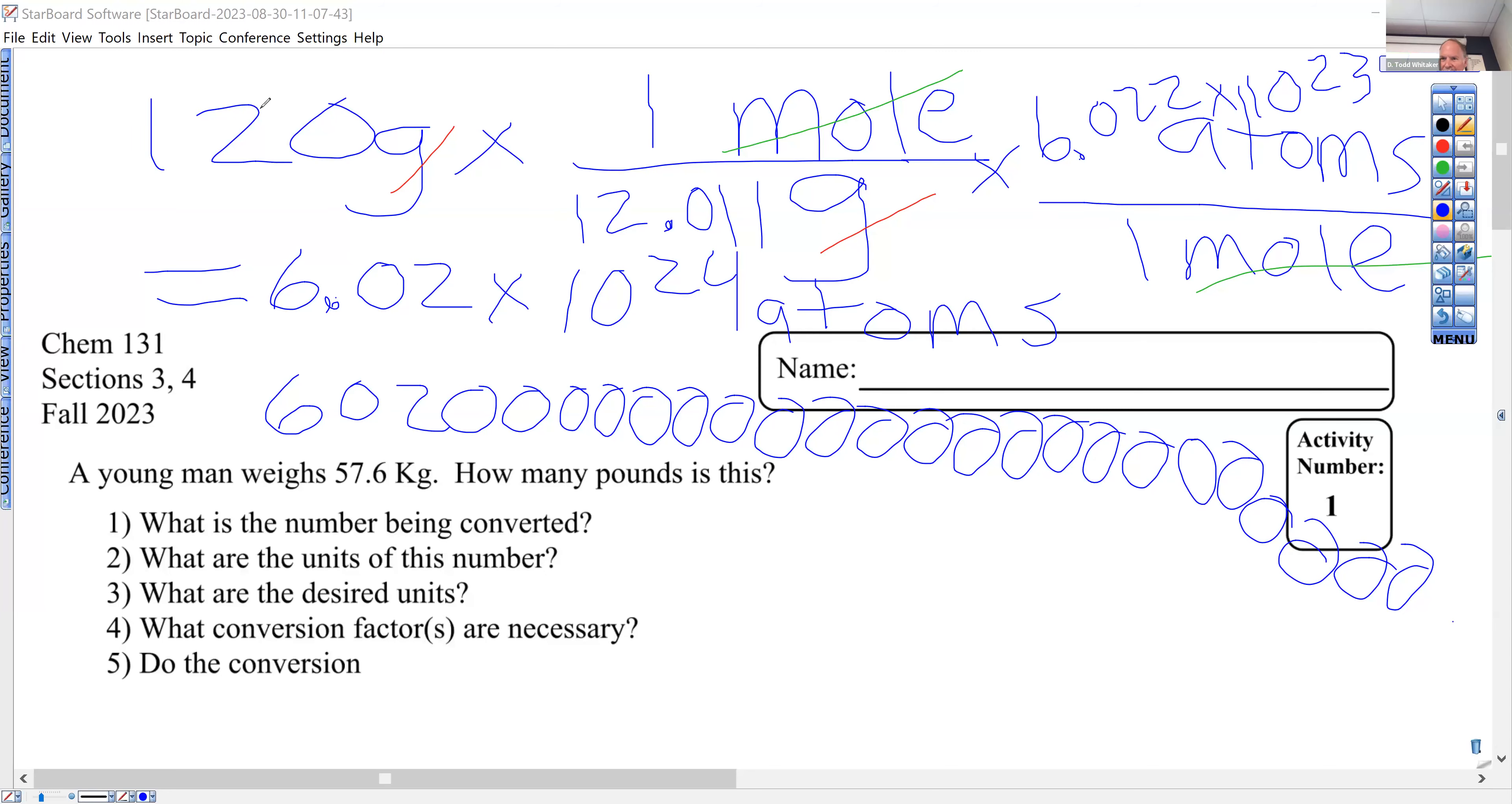Welcome back everybody, we are going to solve an activity today. We figured out how many atoms of carbon were in a lump of coal that weighed 120 grams earlier, but that is not necessary for this activity. I need your name here, Activity 1, and you don't have to copy any part of the question. Only the answers needed here.